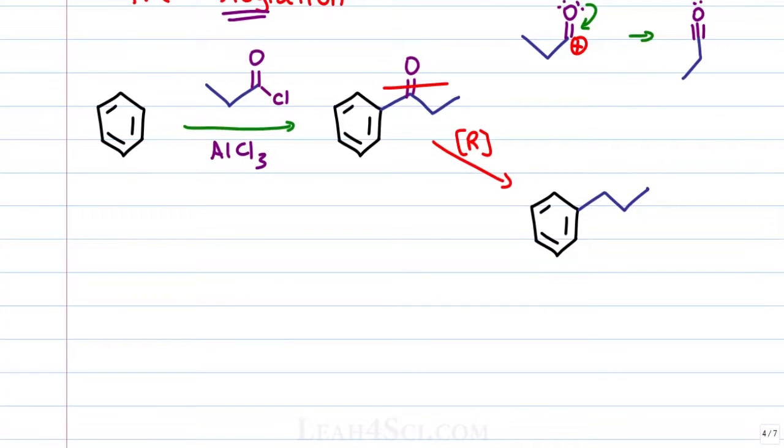The reagents for the reductions are as follows. Clemmensen is under acidic conditions, we're using ZnHg with HCl. The Wolff-Kishner is under basic conditions where we're using H2N-NH2. You can also write that as N2H4, it's just a question of if you're showing it out the way it's bound or just the atoms and this is in KOH. Here we have acid and here we have base.